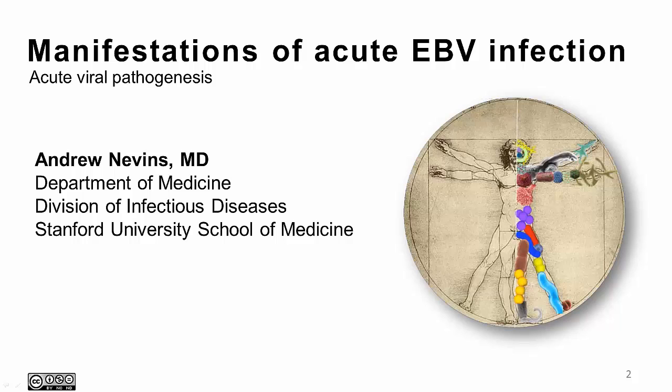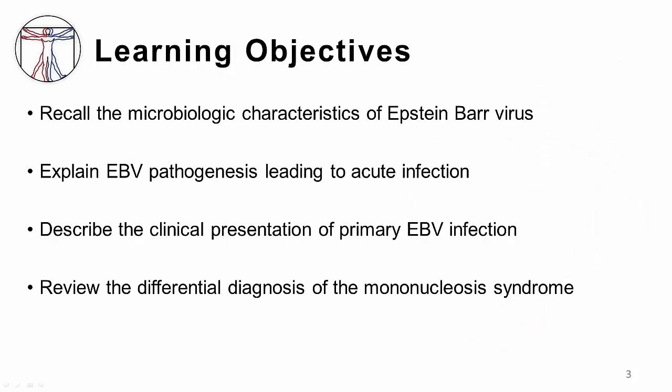Hi, my name is Andrew Nevins with the Division of Infectious Diseases at Stanford University, and in this video I'll be talking about the acute manifestations of Epstein-Barr virus infection. The learning objectives for this video are to recall the microbiologic characteristics of Epstein-Barr virus, to explain Epstein-Barr virus pathogenesis leading to acute infection, to describe the clinical presentations of EBV infections, and to recall the differential diagnosis of the mononucleosis syndrome.